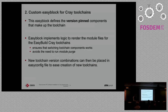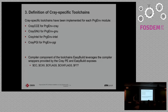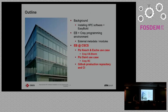The EasyBlocks are specific for the Cray toolchains — you can go on GitHub to see the details. We have one toolchain for each programming environment available on Cray, and we automatically map the variables needed for building software on Cray because we have all wrappers on Cray. We don't use GCC or the compilers directly — we use the Cray compilers.